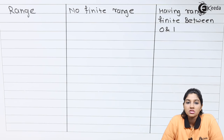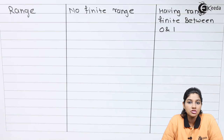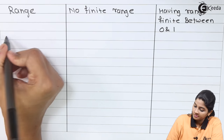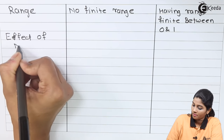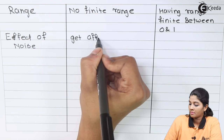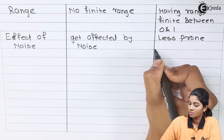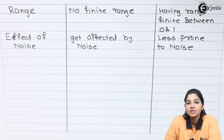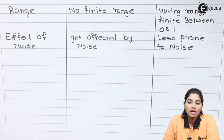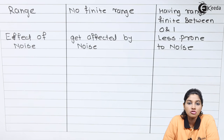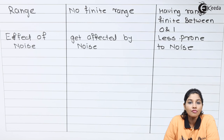The next parameter is the effect of noise. Analog signals are easily affected by noise whereas digital signals are less prone to noise. Similarly for distortion, analog signals are easily affected by distortion — which may be harmonic distortion, phase distortion, or frequency distortion — whereas digital signals, as they carry information in discrete values, are much less affected by distortion.